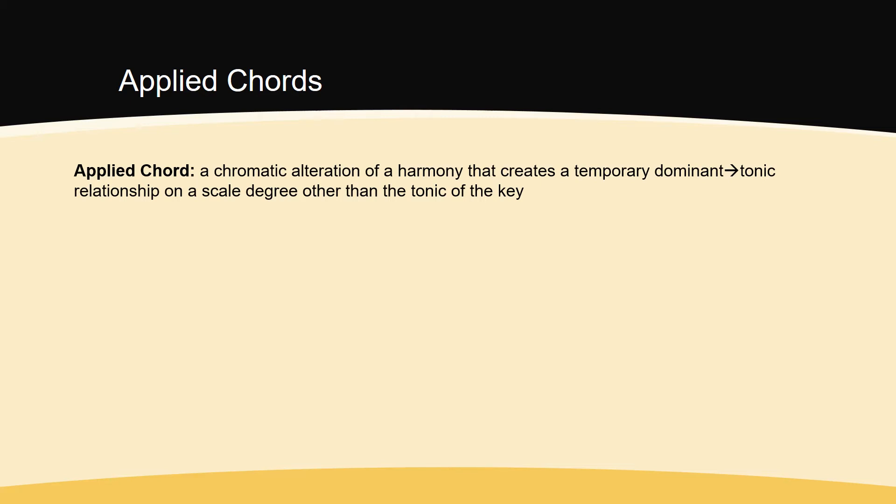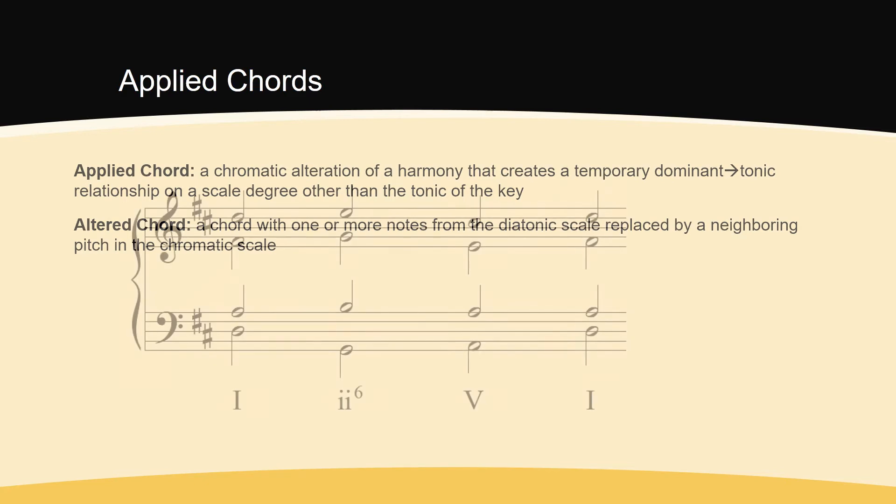Because we must modify chord pitches from those of the diatonic scale, an applied chord is an example of an altered chord, another category that we will focus on for the remainder of the curriculum. Altered chords are chords with one or more notes from the diatonic scale replaced by a neighboring pitch in the chromatic scale. Let's look at an example.